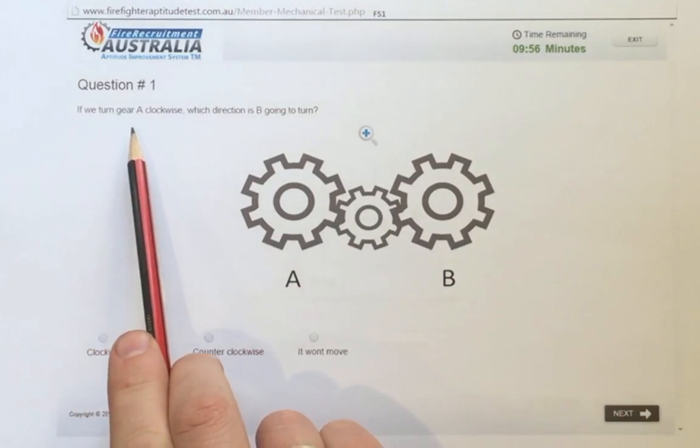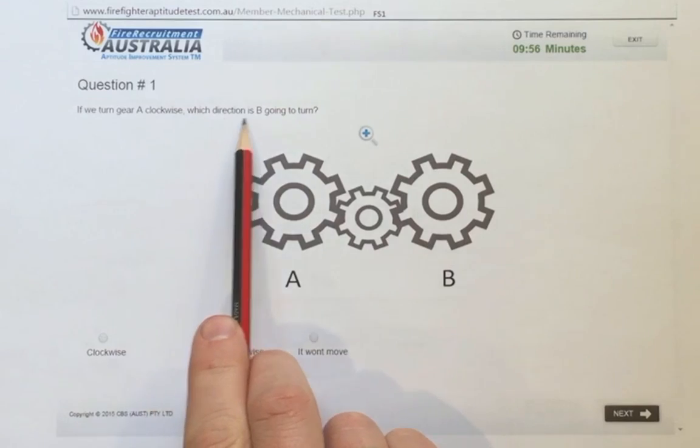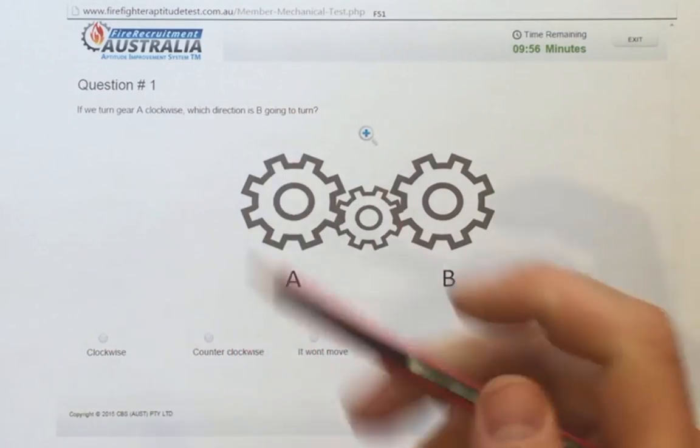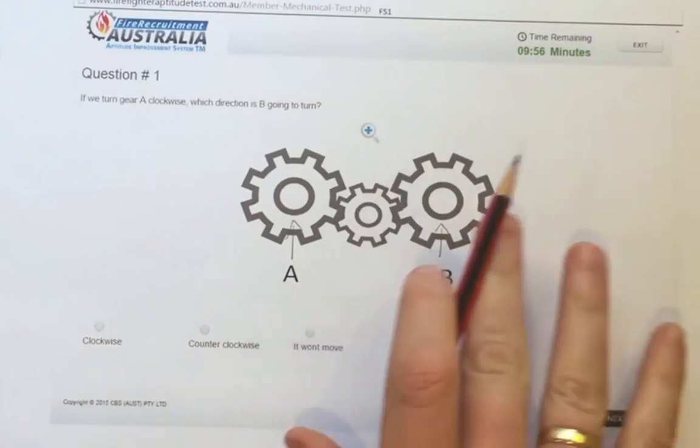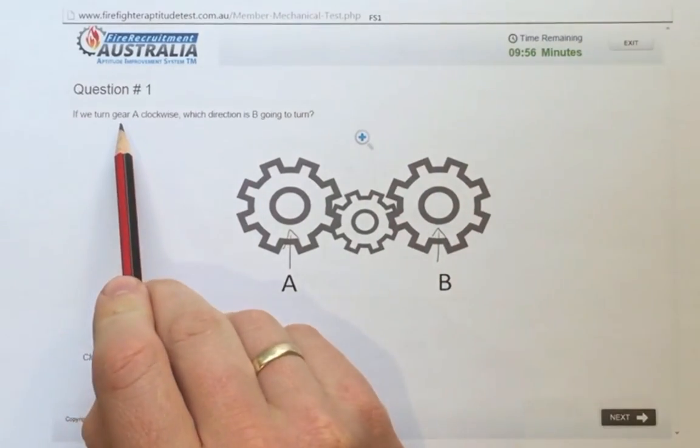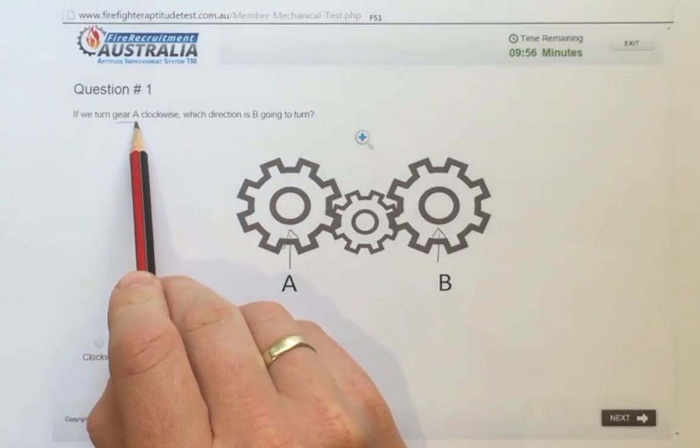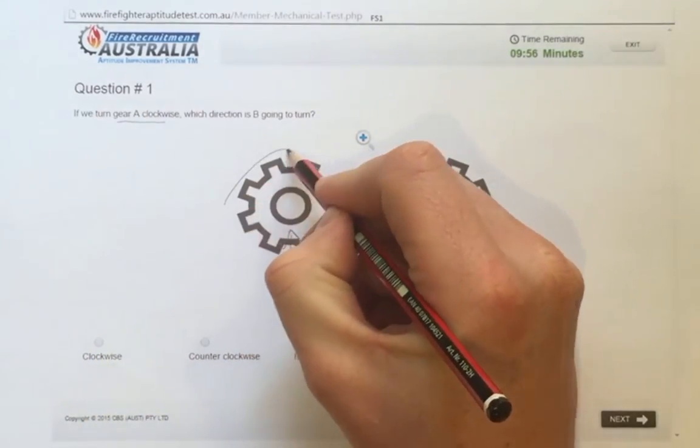The question is if we turn gear A clockwise, which direction is B going to turn? So that's gear A there, gear B there, gear A clockwise. So that's that way. I want to know which way gear B is going to turn.